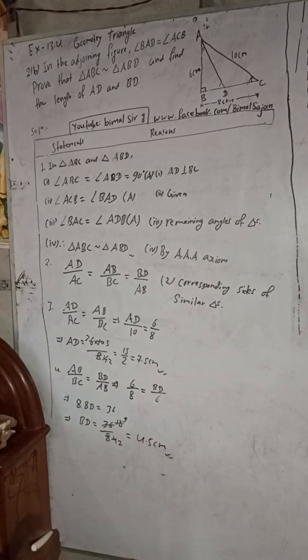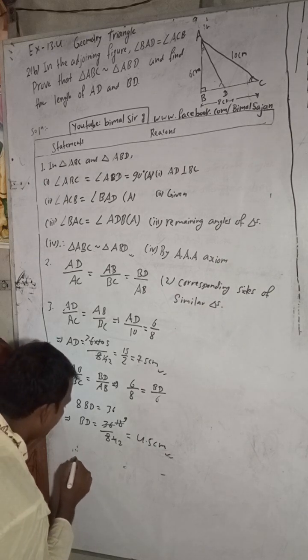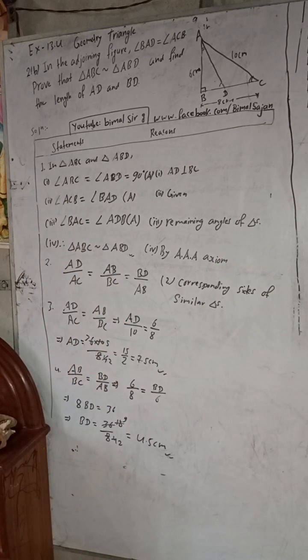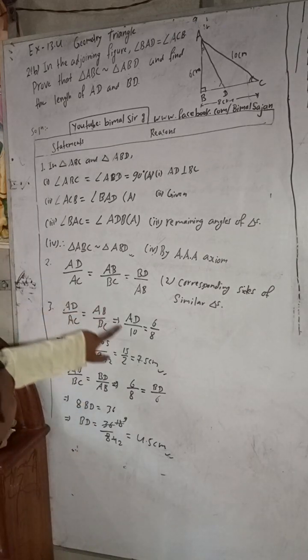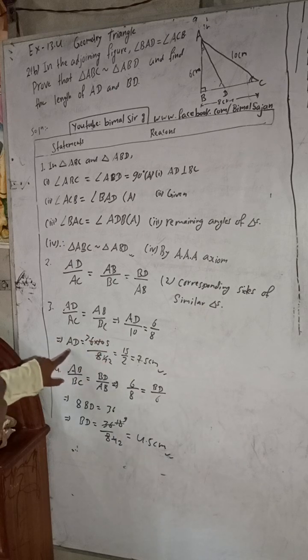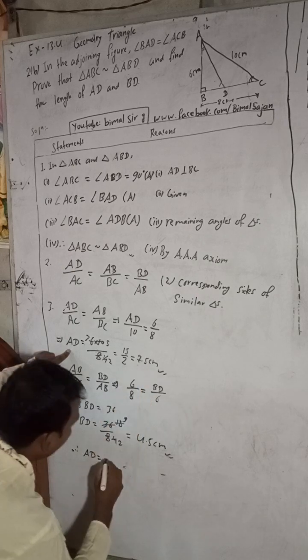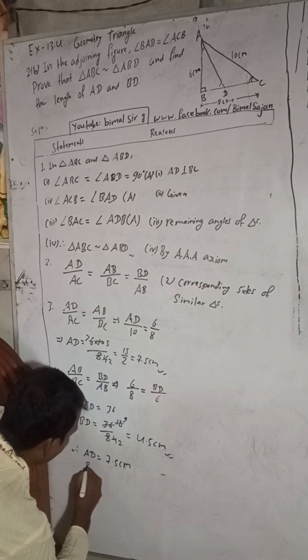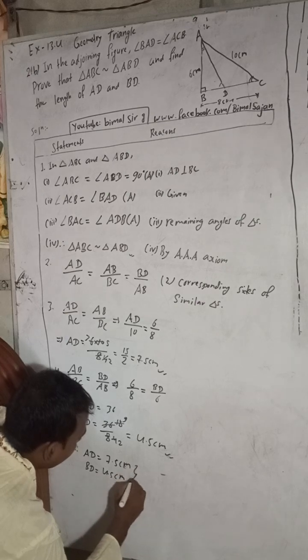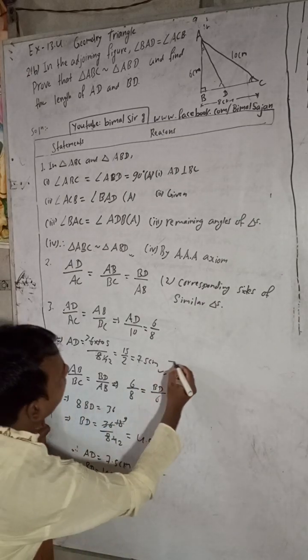Therefore, AD is equal to 7.5 cm and BD is equal to 4.5 cm. This is the required solution.